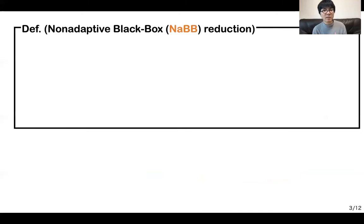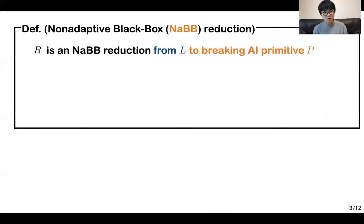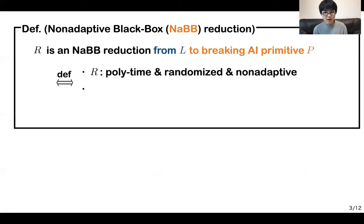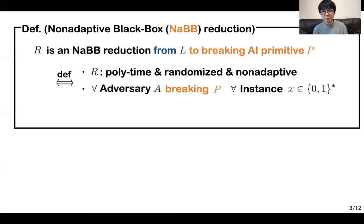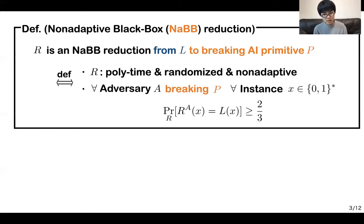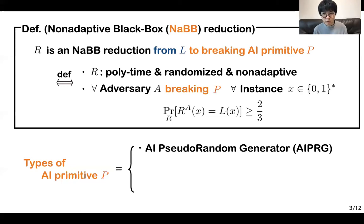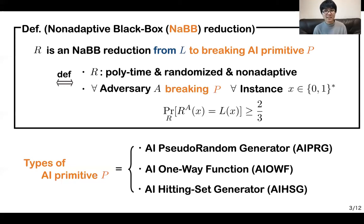Now let's see our results. Before looking at them, I will explain more about non-adaptive black box reductions. R is a non-adaptive black box reduction from a language L to breaking some auxiliary input primitive B if R is a polynomial time, randomized, and non-adaptive oracle machine. For any adversary A breaking this primitive and for any instance X of problem L, R given access to A can recognize the characteristic of X with high probability. We consider three types of auxiliary input primitives: auxiliary input pseudorandom generator, one-way function, and hitting set generator.